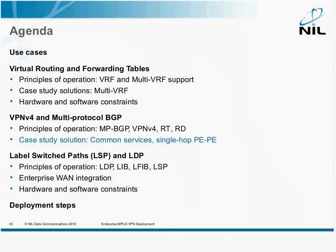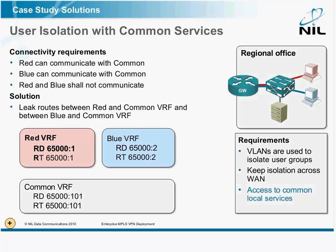Now let's see how we can solve two case studies with what we've learned so far. We'll go for common services and single-hop PE to PE cases. If you remember, we have the original office with two types of users: red and blue users.